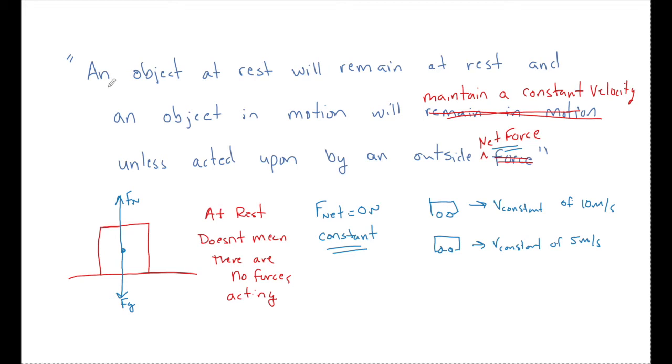So remember, an object at rest will remain at rest like this box unless it is acted upon by an outside net force to get it moving. And an object in motion will remain at a constant velocity unless it's acted upon by an outside force. Because once again, when this object is moving this way, there's still a force of gravity.